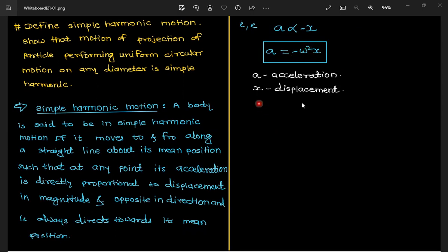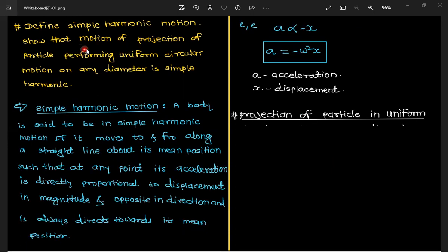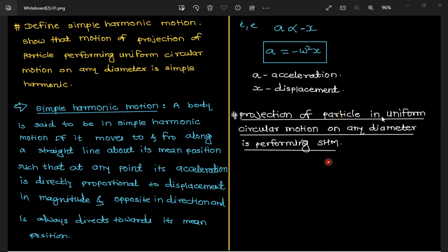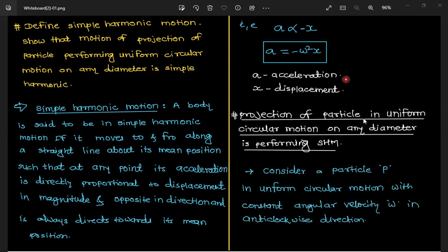Here a is acceleration and x is displacement. Now let's move to the second part of the question — we have to show that the projection is also performing simple harmonic motion. Consider a particle P performing uniform circular motion with constant angular velocity ω in the anti-clockwise direction. We need to draw a diagram for this.